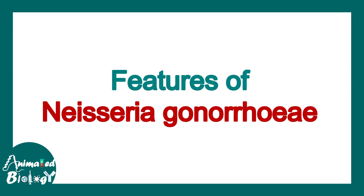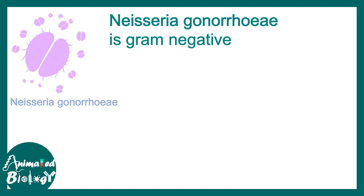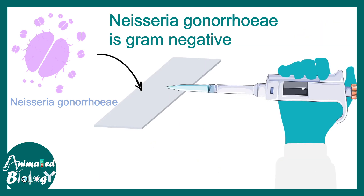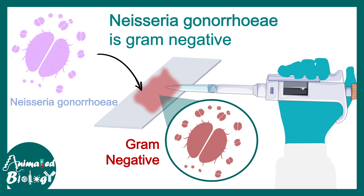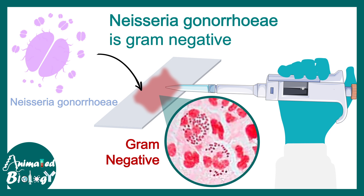Features of N. gonorrhea: Neisseria gonorrhea are gram-negative organisms. They have a thin cell wall, which is why their cell wall cannot retain crystal violet, and they counterstain with pinkish safranine. Here you can see some neutrophils in a microscopic slide, which are heavily infested with N. gonorrhea — you can see these dots.